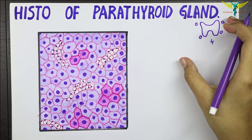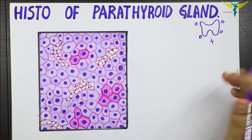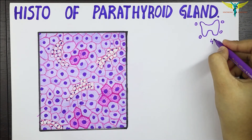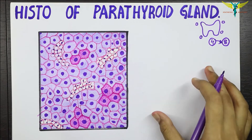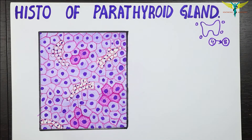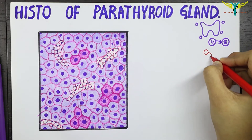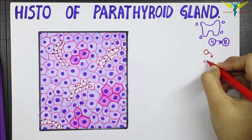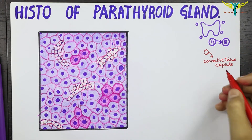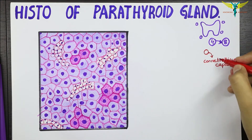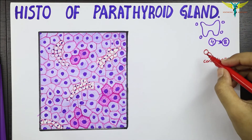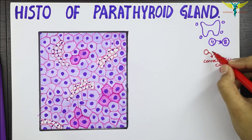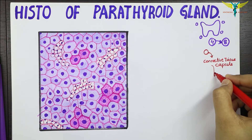That means the parathyroid glands are numbered as four, whereas sometimes there may be as many as eight parathyroid glands. Each parathyroid gland consists of a connective tissue capsule from which some septa extend into the gland.